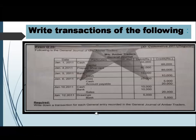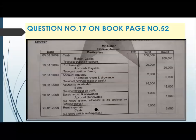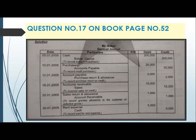Now I proceed further to the next question. We have exam question number 17 on book page number 52. This is the question in which we have already prepared from the transactions — we saw the transactions in general journal form. Now in this general journal form, you have to form T-accounts. This is a home task. Exam question number 17, you have to prepare the T-accounts.